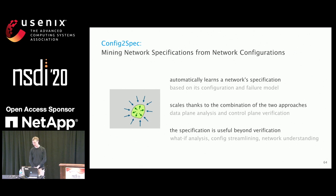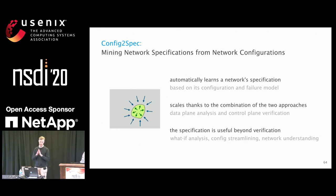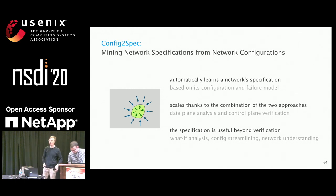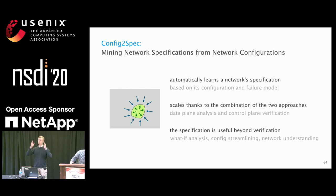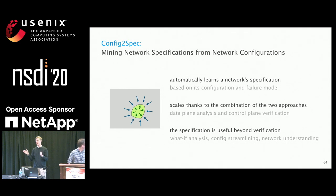Q: Very nice work. How do you define that initial space of policies from which you start refining? A: Theoretically, the initial space could be the full space that your policy language defines, but this space is huge. For our evaluation, we always started by doing one data plane analysis, which gives you all the policies that hold for the very first data plane — and that becomes our initial candidate set. So basically, every path in the data plane becomes a policy.